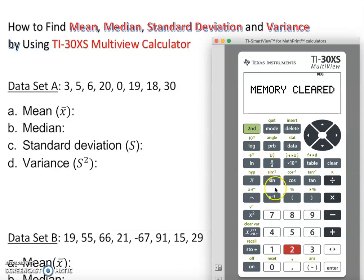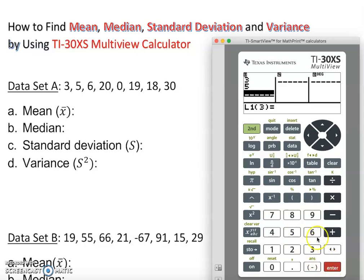Now let's start. I'm going to type this data in. I'm going to press the data. Then I'm going to press 3 enter, 5 enter, 6 enter, 20 enter, 0 enter, 19 enter, 18 enter, 30 enter. So I finished all my data. Notice that this one is saying ninth number. We have eight numbers 1, 2, 3, 4, 5, 6, 7, 8. So we don't need another one.